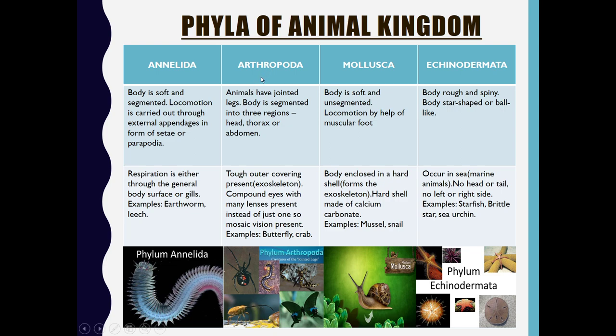We have Phylum Arthropoda. The organisms coming under this category have jointed legs. The body is segmented into three parts: the head, the thorax, and the abdomen. They have a tough outer covering which is the exoskeleton. They also have compound eyes with many lenses, giving them mosaic vision. Animals coming under this category include butterfly and crab.